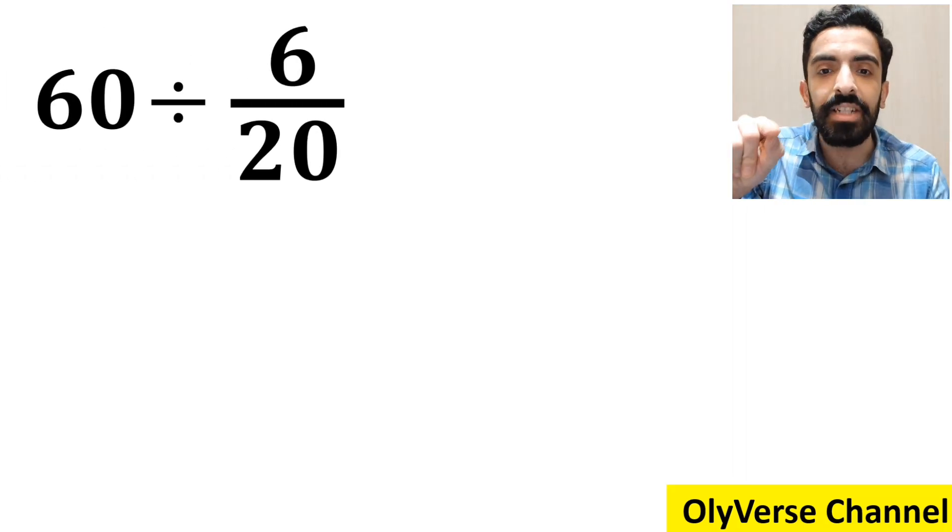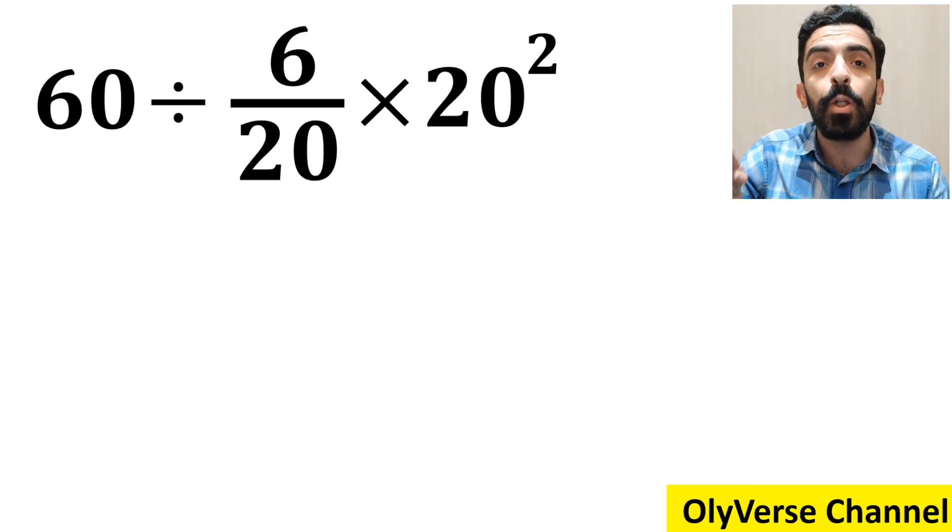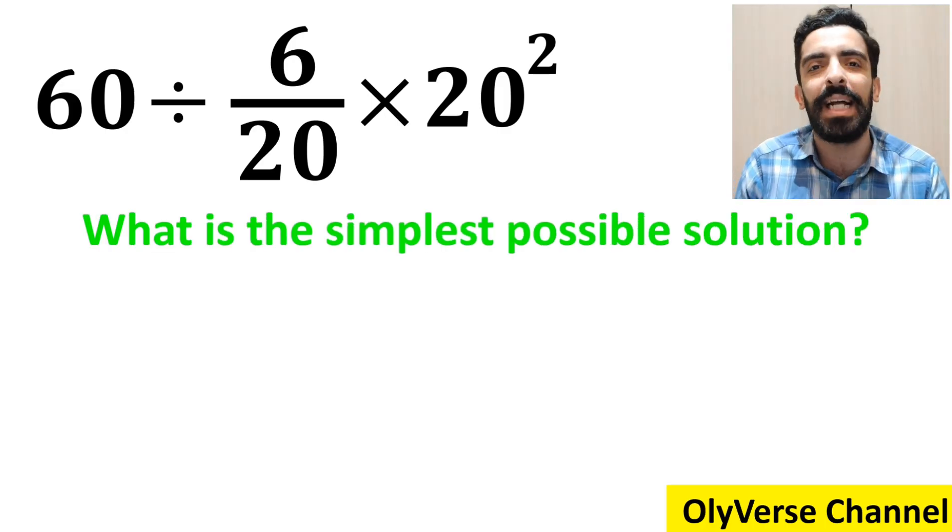If we have the expression 60 divided by 6 over 20 multiplied by 20 to the power of 2, what is the simplest possible answer for this expression?